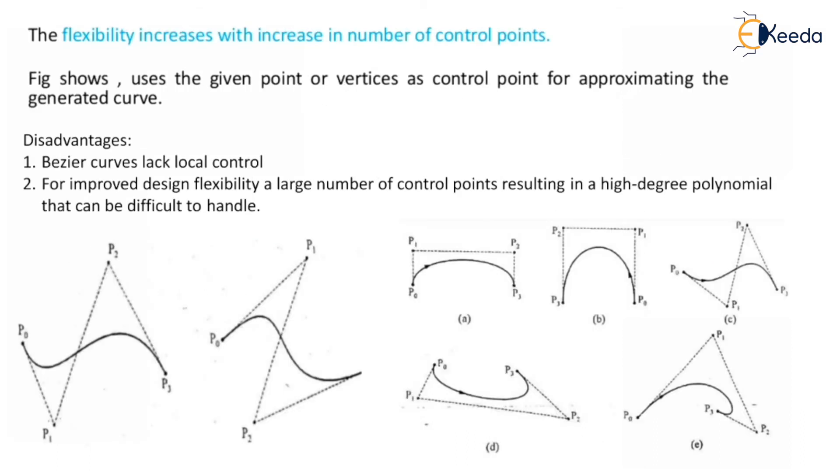The flexibility increases with increasing number of control points. The figure shows the use of given points or vertices as control points for approximating the generated curve. Disadvantages of Bezier curves: it's having lack of local control. For improved design flexibility, a large number of control points resulting in a high-degree polynomial can be difficult to handle.